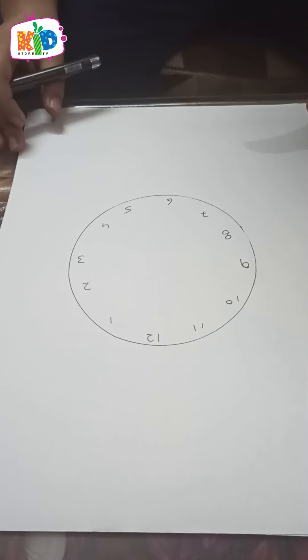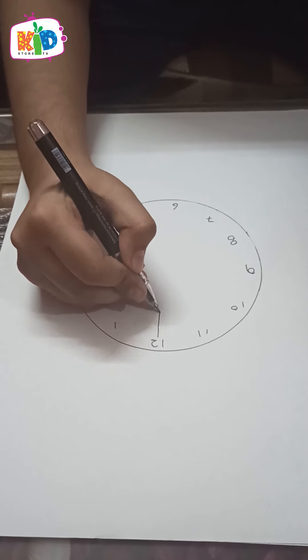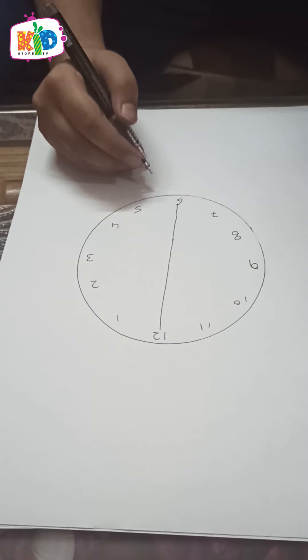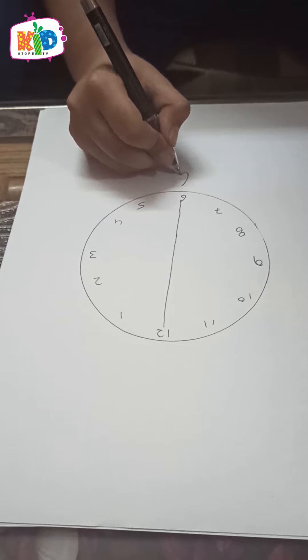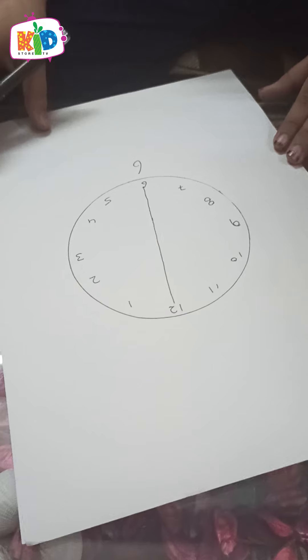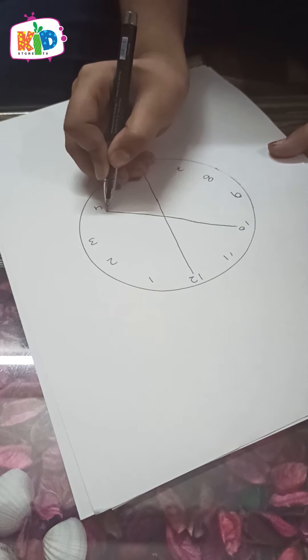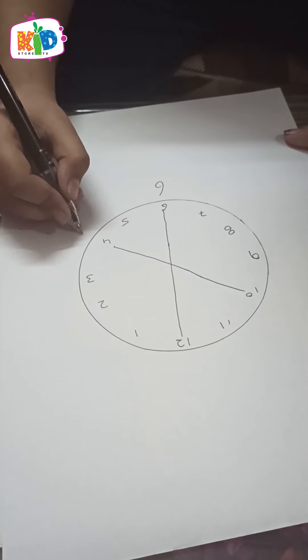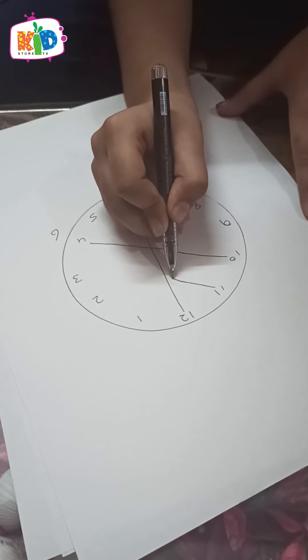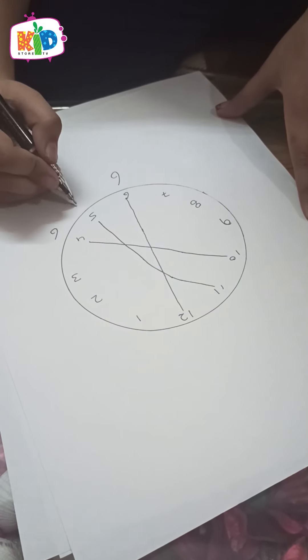If we subtract 12 minus 6, we get 6. If we subtract 10 minus 4, we get 6. If we subtract 11 minus 5, we get 6.